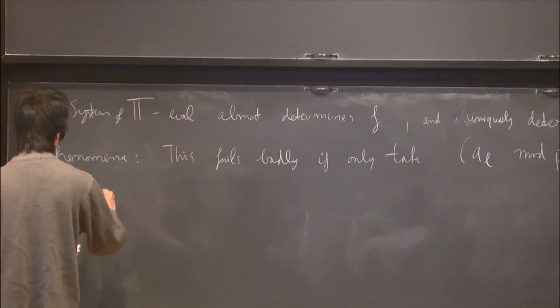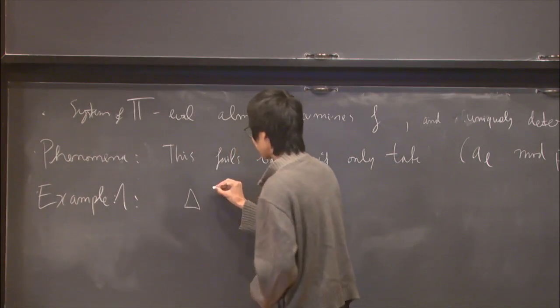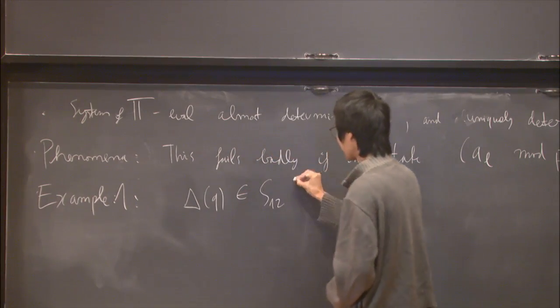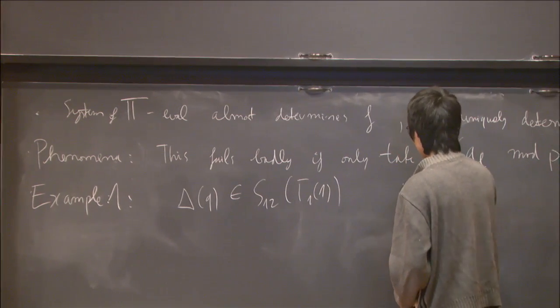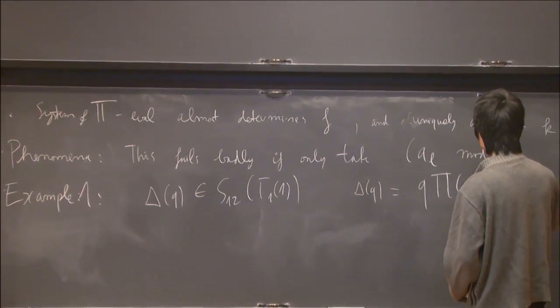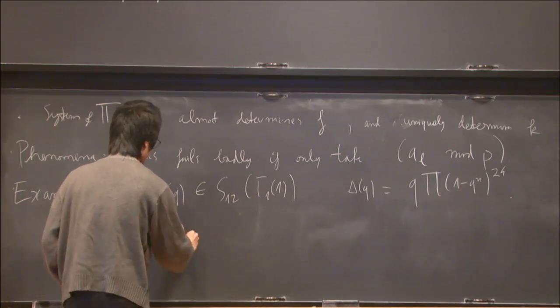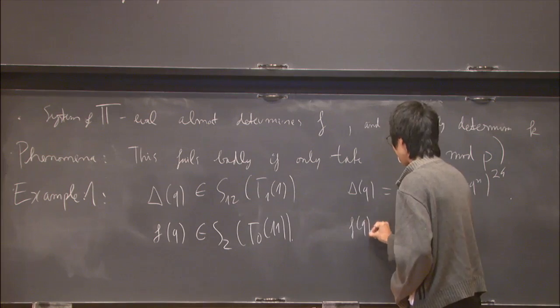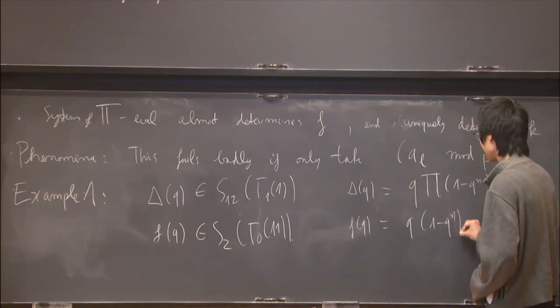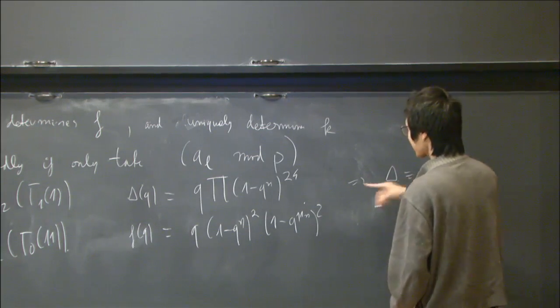So let me give two kinds of examples. Example one is the delta function, which is a unique normalized cusp form of weight 12 in level one. And this has a product expansion like this. And because it's unique, it is automatically an eigenform. And there's another unique eigenform of level number 11 in weight 2. And this turns out to also have a product expansion. And so from this, you see that the Fourier coefficients of these guys are actually integers. And from this series expansion, you see that delta and f are as formal series here, congruent mod 11.